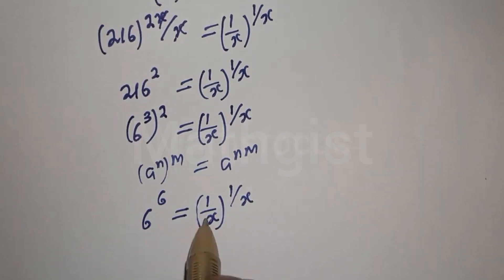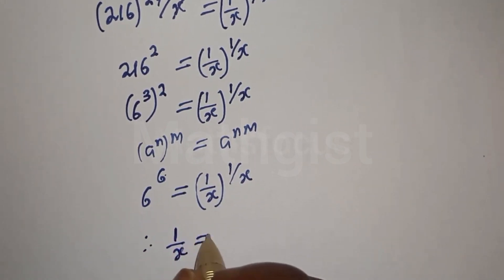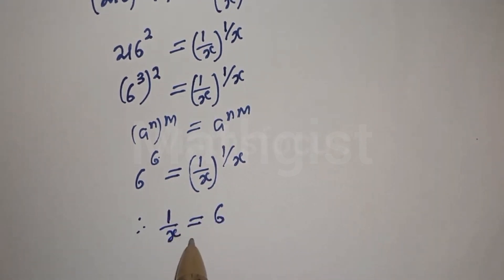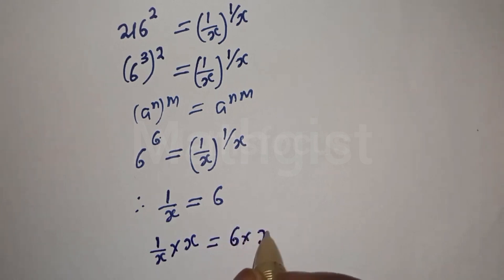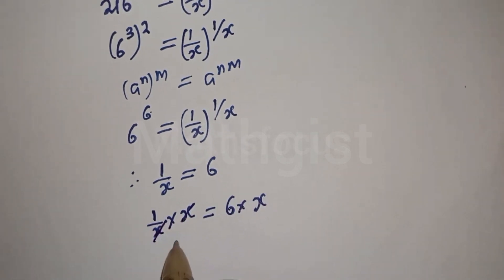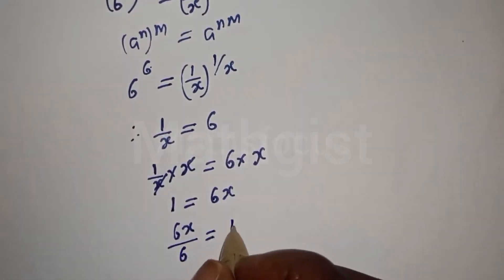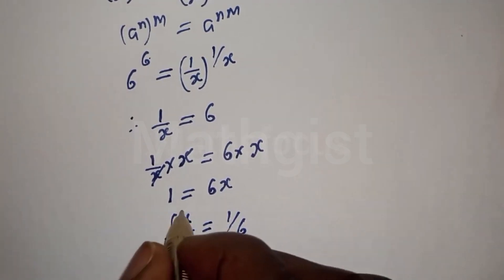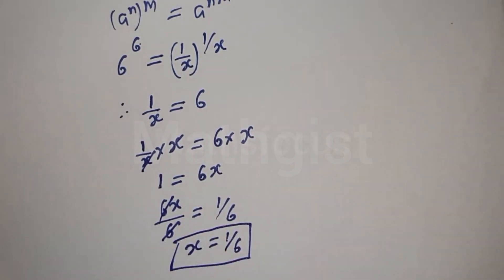We can see the base on the left is 6, and the exponent is 6. On the right, one over x equals 6 and the exponent one over x also equals 6. So one over x equals 6. Multiplying both sides by x gives one equals 6x. Dividing both sides by 6 gives x equals one over six. That is the final answer. Thank you.